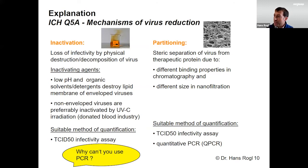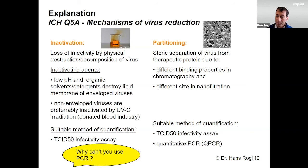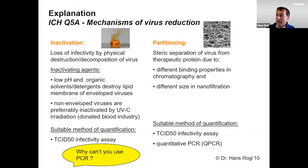Non-enveloped viruses can be addressed using UV irradiation. It's widely used in the blood industry but not very much in the biotech industry — at least in my own experience — partly because it causes certain harm to your protein product.